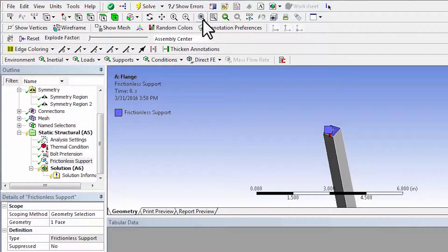So I can say zoom to fit here, and that completes the definition of the essential boundary conditions. So we can move to specifying the natural or traction boundary conditions.